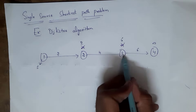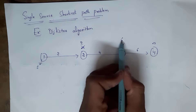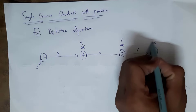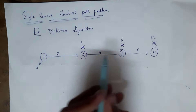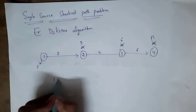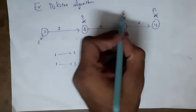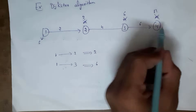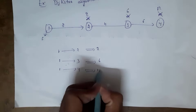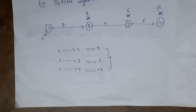Similarly, the distance from node 3 to node 4 is 6 plus 6, that is 12. So I am replacing this infinity with 12. Now I have visited node 2, node 3, and node 4 — all nodes visited. Distance from node 1 to node 2 is 2, from node 1 to node 3 is 6, and from node 1 to node 4 is 12. This is the single source shortest path problem.